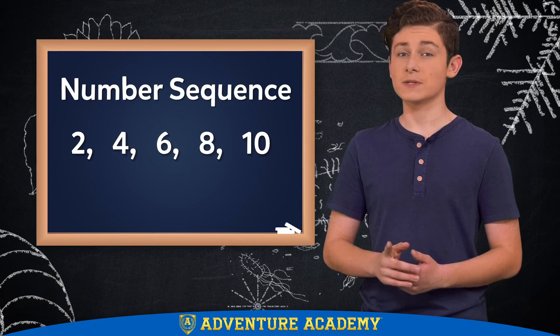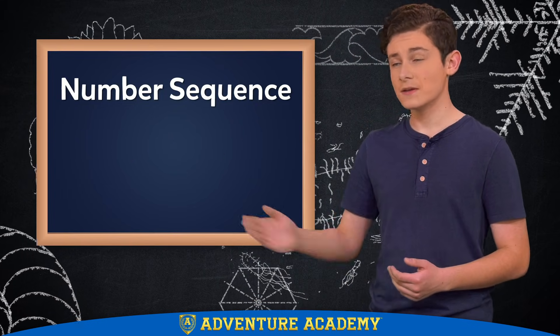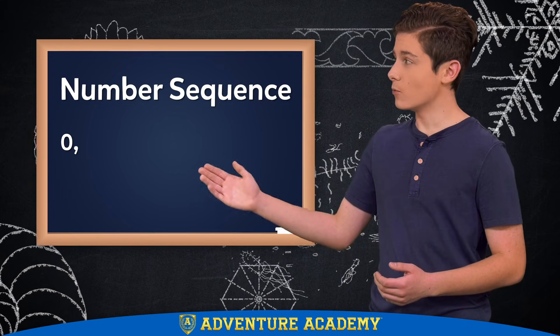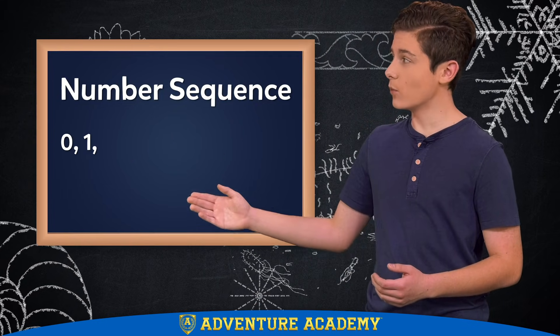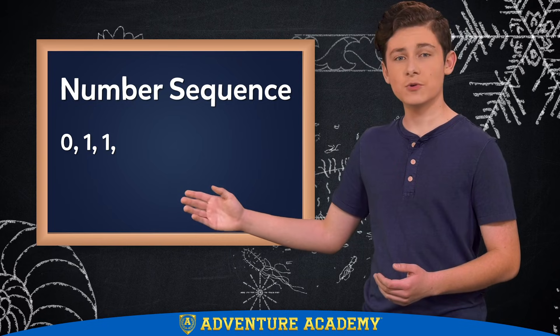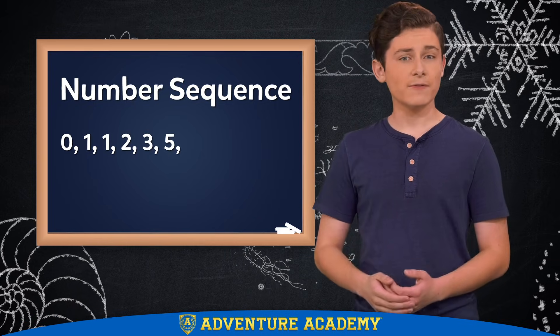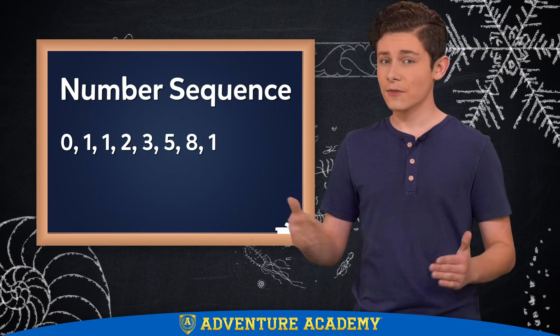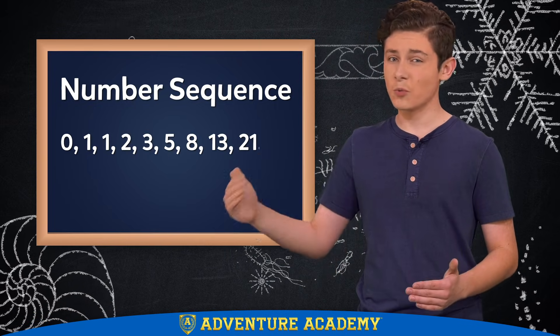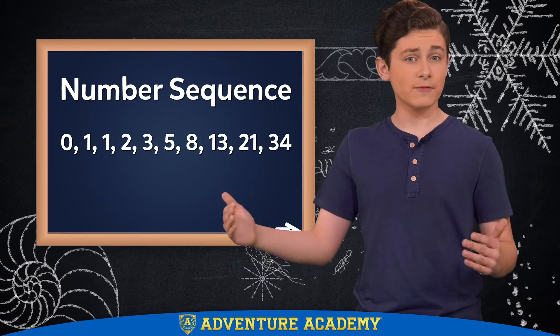But this sequence is different: zero, one, one, two, three, five, eight, thirteen, twenty-one, thirty-four.